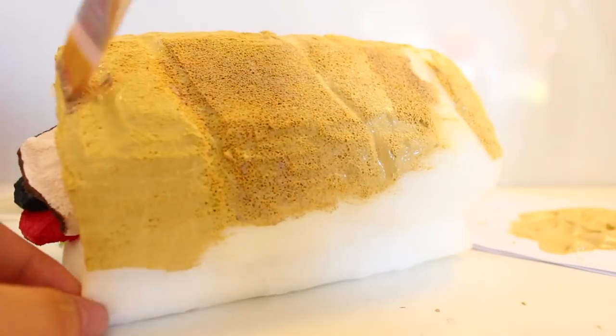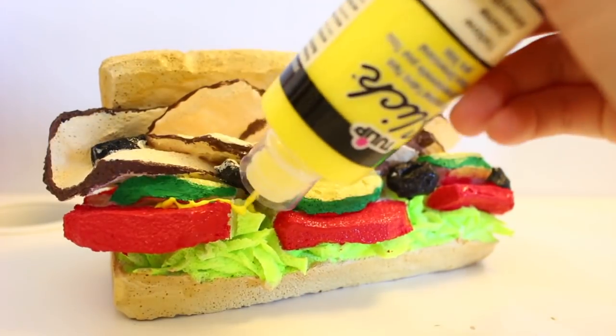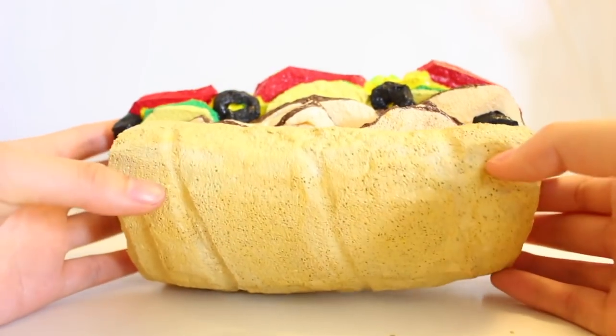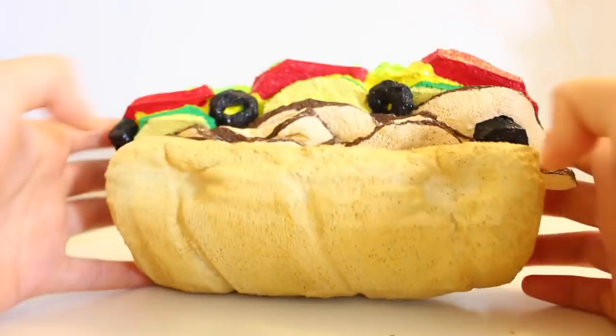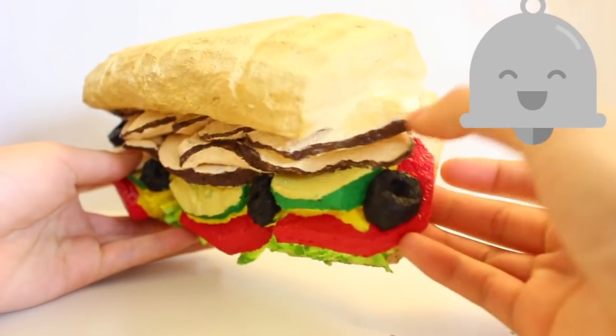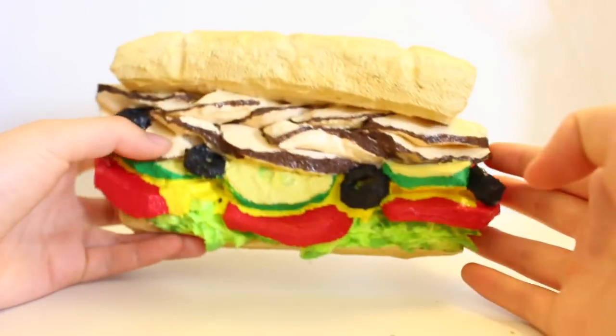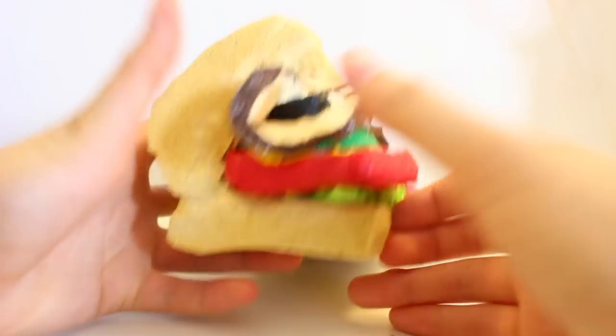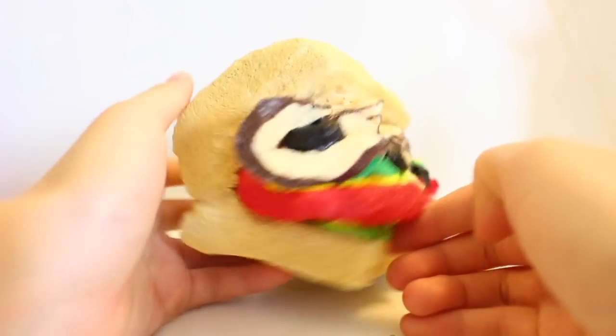And for final touches I used yellow paint as cheese or mustard. And just like that we're done with our squishy. So I hope you guys enjoyed watching this video. If you're not part of the notification squad already, be sure to hit the bell icon down below so you can get notified when I upload a new video. Also don't forget to subscribe and I'll see you guys in my next video. Bye guys!